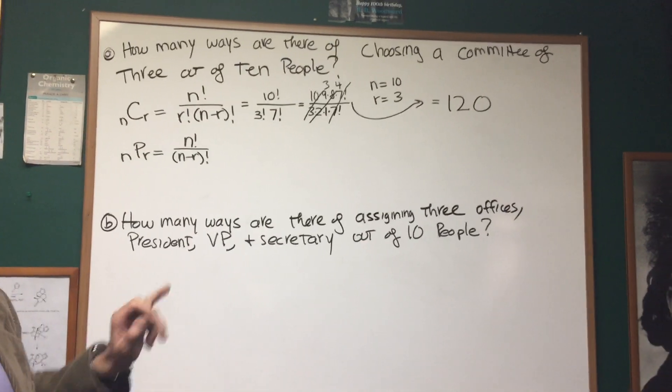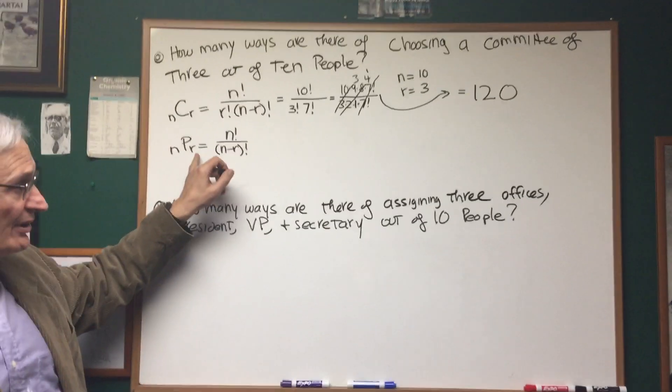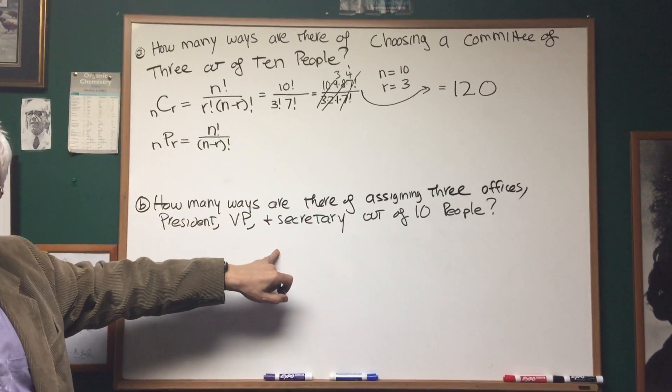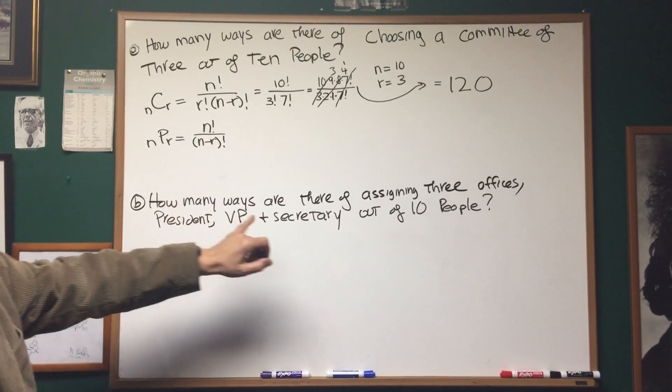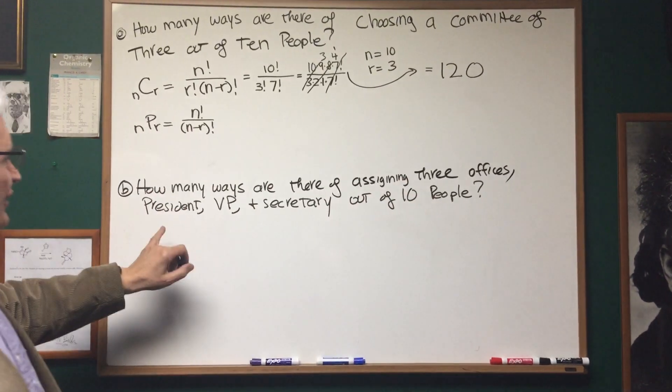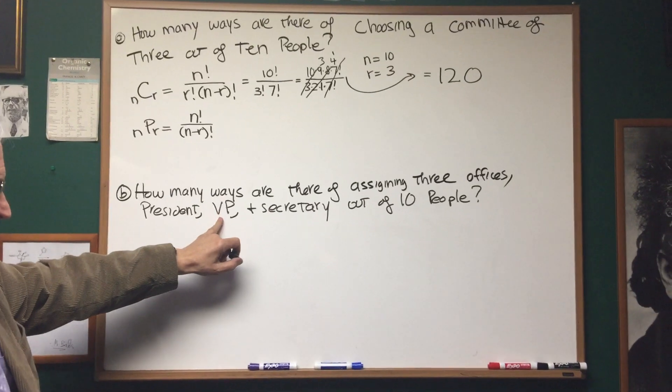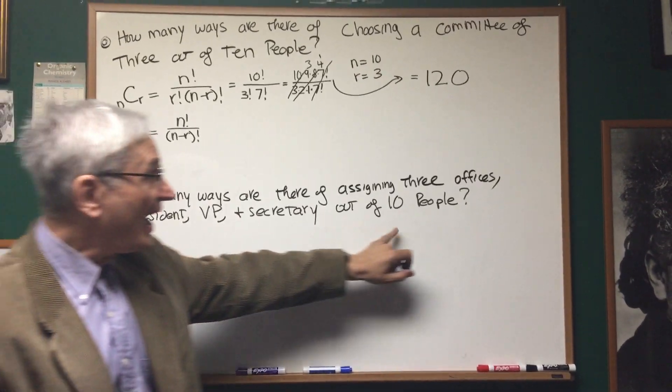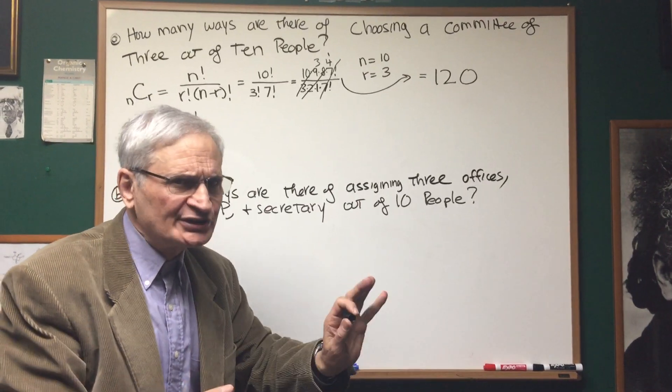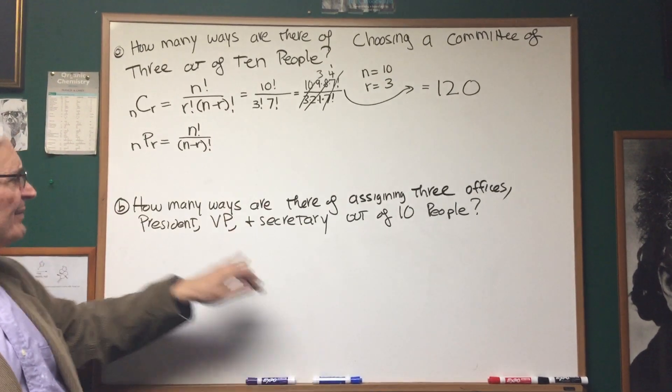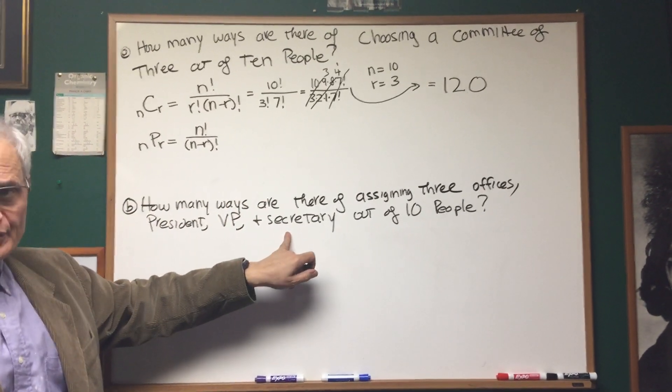Now let's go to this second problem. How many ways are there of assigning three offices: president, vice president, and secretary out of ten people? Now notice the difference between this and the previous problem. Here we have assigned offices.